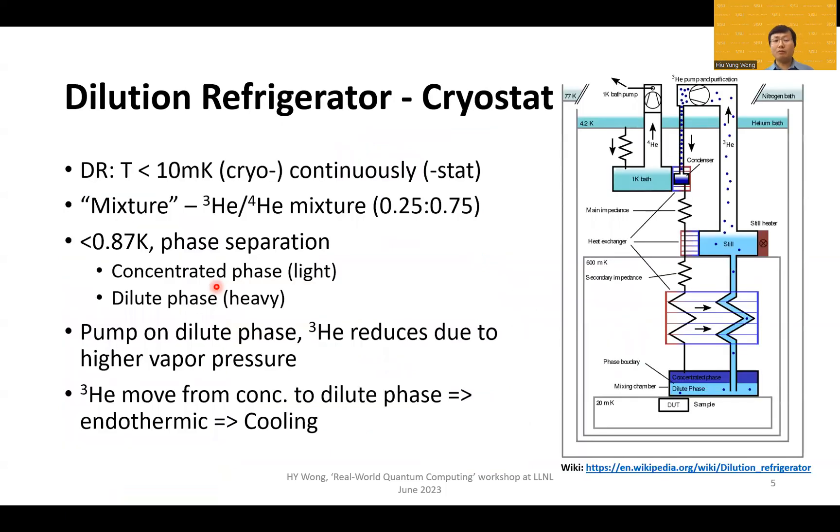The dilution refrigerator is used to cool down the qubits to less than 10 millikelvin. It uses a mixture of helium-3 and helium-4. Basically, it has two phases, a concentrated phase and a dilute phase. By taking away the liquid helium from the dilute phase, the liquid helium-3 in the concentrated phase will diffuse across the boundary. Through this process, it is an endothermic process that absorbs heat from the environment. And that's how you cool down the device. Here again, no hardcore quantum physics.